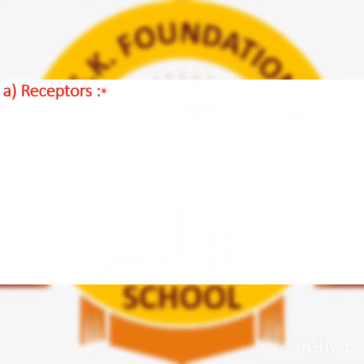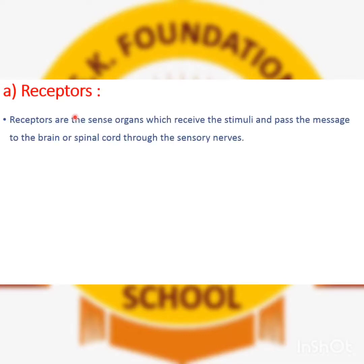Receptors are the sense organs which receive the stimulus and pass the message to the brain or spinal cord through sensory nerves. In simple words, receptors are your sense organs like your skin, eyes, ears, and tongue. These all receive the signal and pass it to the brain with the help of sensory nerves.